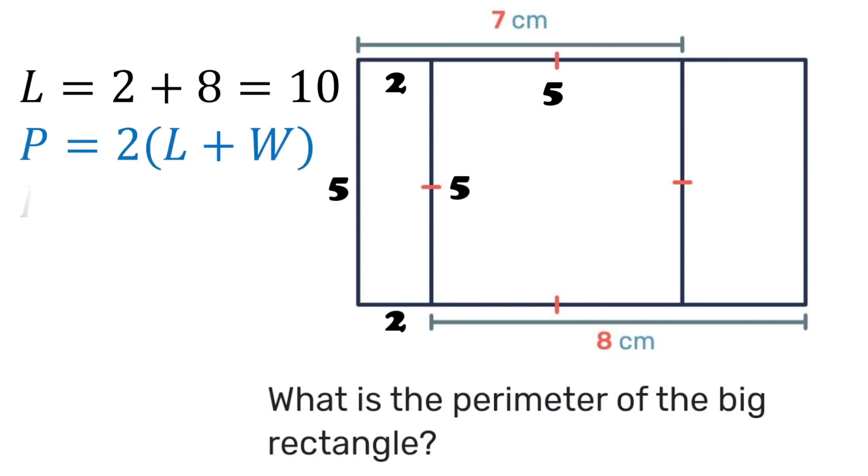So when we substitute into our formula 10 plus 5 would give us 15 and the perimeter would still be 30. It appears no matter what value we guess for the size of the square we still end up with the perimeter of the big rectangle being 30.